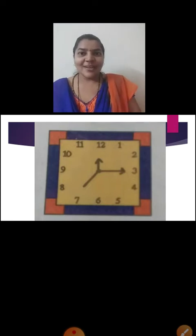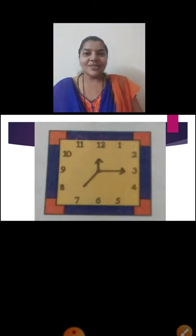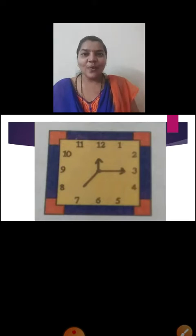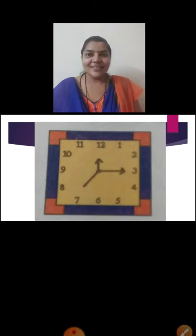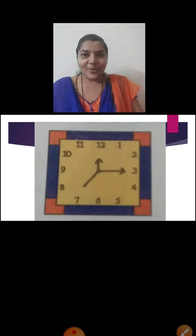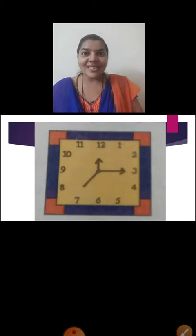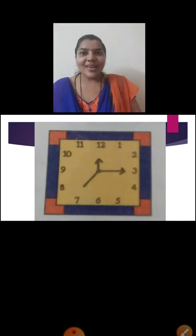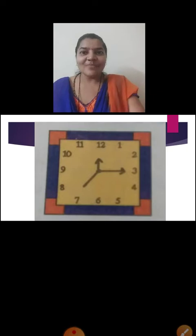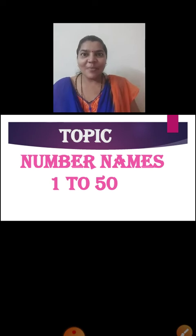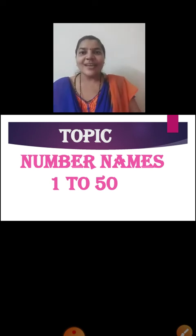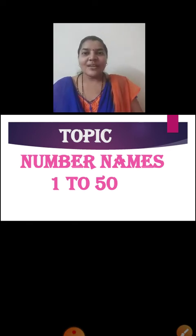We will read the numbers in the clock. We will start from the right hand side after 12 o'clock. All will repeat after the teacher. These numbers are written in digits, but these numbers can be written in words also. So today we are going to learn how to write the number names. All will pay attention. Now we are going to revise number names from 1 to 50. Teacher will read numbers and you are going to repeat after me.